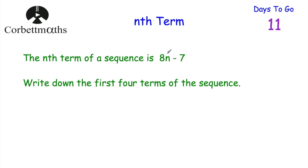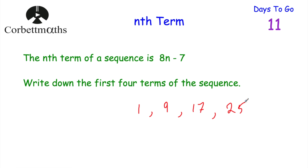This time we've been given the nth term of a sequence — 8n subtract 7 — and we've been asked to find the first four terms. We just let n equal 1, 2, 3, and 4. If n equals 1: 8 times 1 is 8, take away 7 is 1. If n equals 2: 8 times 2 is 16, take away 7 is 9. If n equals 3: 8 times 3 is 24, take away 7 is 17. If n equals 4: 8 times 4 is 32, take away 7 is 25. That's the first four terms — and we can check it because we're going up by 8 each time.